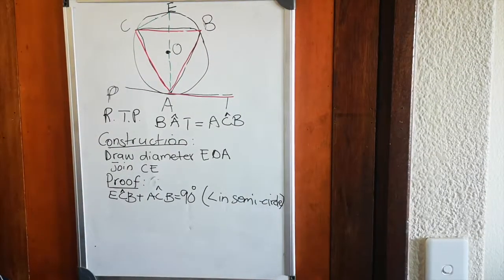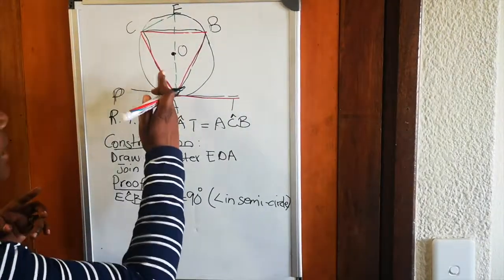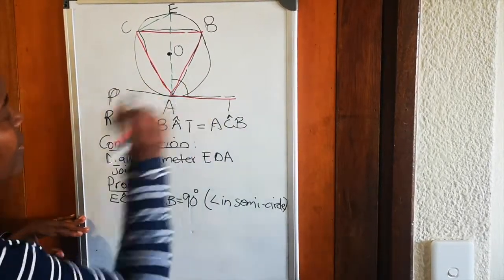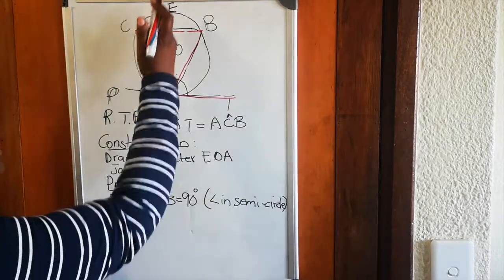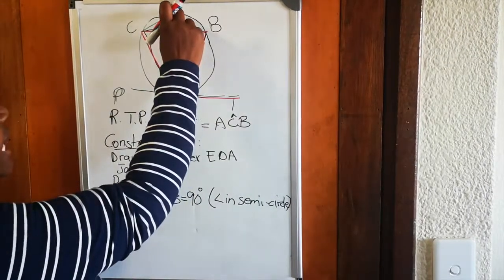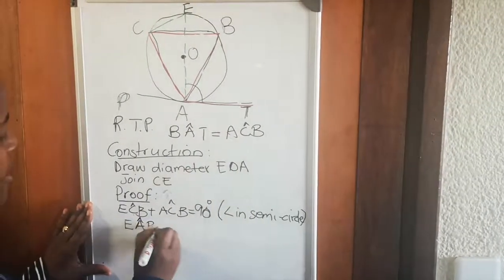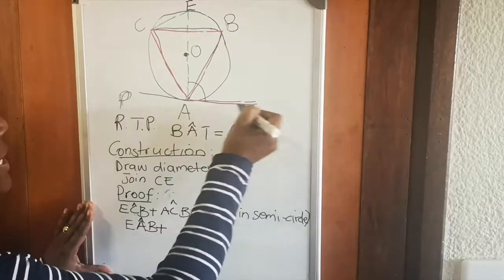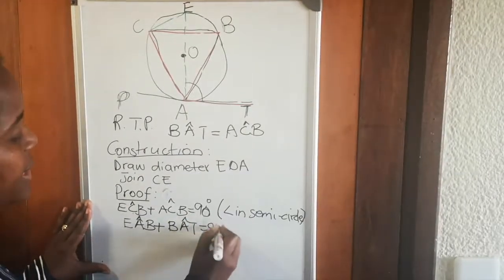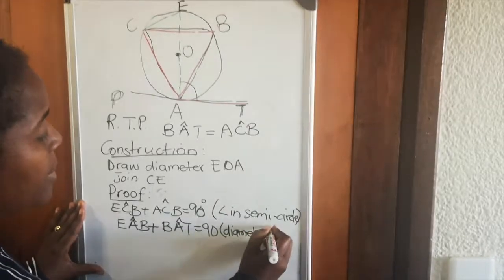The next part involves the angle between the diameter and the tangent. This angle is 90 degrees because it's the angle between a diameter and a tangent. But this angle is also made up of two angles: angle E-A-B plus angle B-A-T equals 90 degrees. The reason is: the diameter is perpendicular to a tangent.